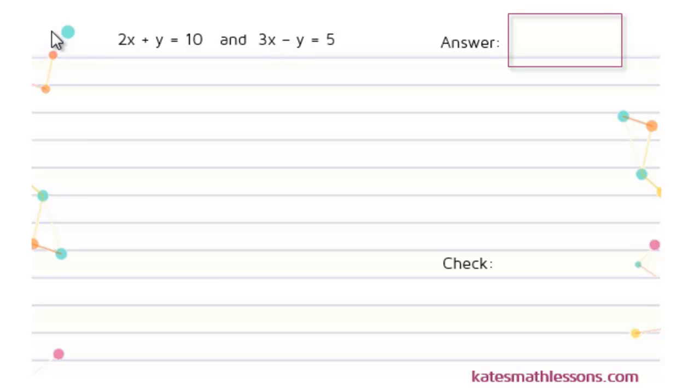Here we have a system of equations and we're going to use the elimination method to solve this system. When you're using elimination, the goal is to get one of the variables to cancel out, to eliminate either the X or the Y.